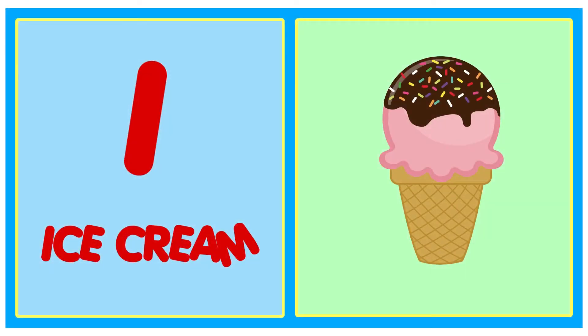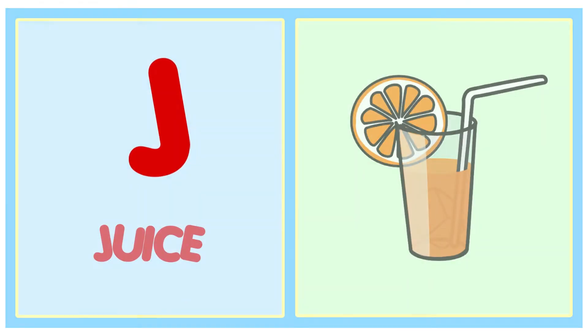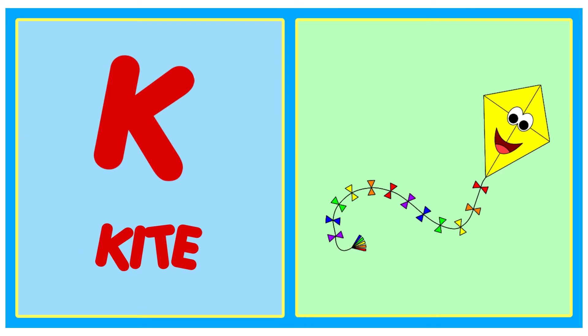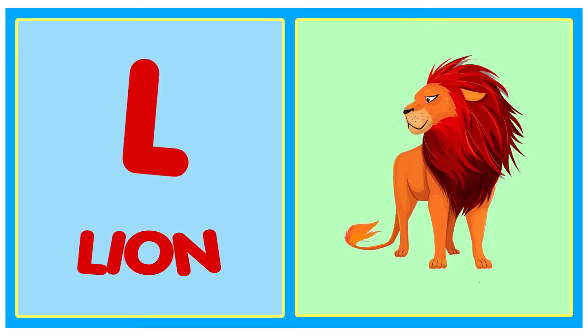I for Ice Cream. J for Juice. K for Kite. L for Lion.